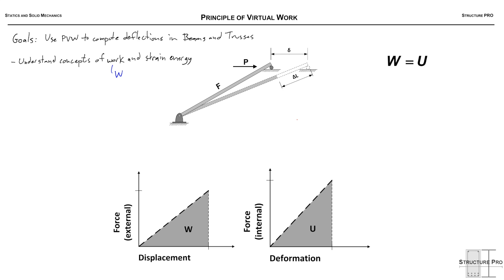We're going to be going over these concepts, and specifically work is called big W, strain energy big U, and we're going to derive the principle of virtual work equation for trusses. And then we'll just kind of assume that the one from beams came from a similar place.